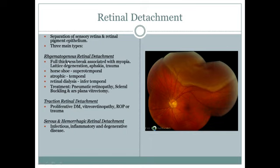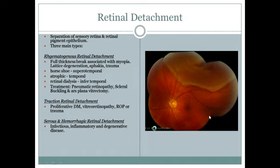Rhegmatogenous retinal detachment involves a full thickness break in the retina, caused by myopia (elongated eyeball), senile degeneration, aphakia (absence of lens), or trauma. The break shape is typically horseshoe; superior temporal breaks are called horseshoe tears, inferior temporal breaks are called retinal dialysis, and if the whole temporal site detaches it is called atrophic.